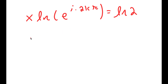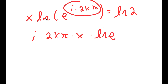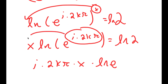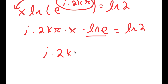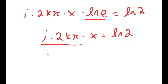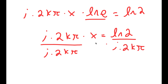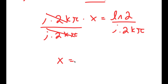This simplifies to i times 2k pi times x times ln e, because I can again use the natural logarithm power rule and bring the exponent to the front. This equals ln of 2. And since ln of e is simply equal to 1, I get i times 2k pi times x is equal to ln of 2. Dividing both sides by i times 2k pi, I get x is equal to ln 2 over i times 2k pi.